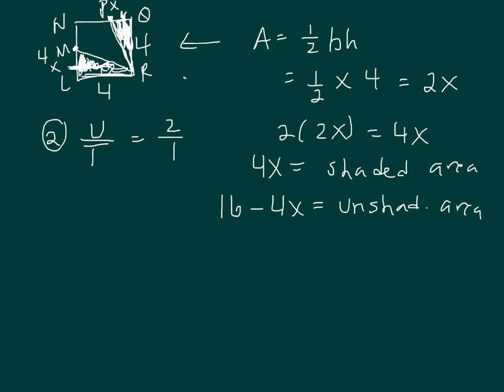So this is what I'm trying to find using clue 2. Unshaded area is 16 minus 4x all over total area which is 16, and that equals 2 to 1. We're not going to do it, but you could solve this equation for x, and that's what we're trying to find because I was letting line segment PQ equal x.